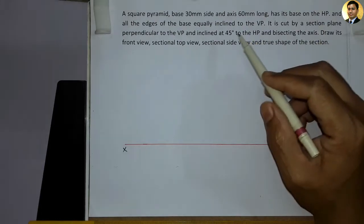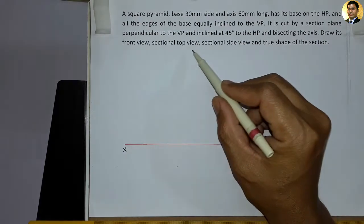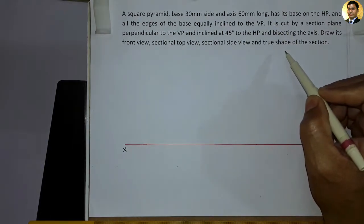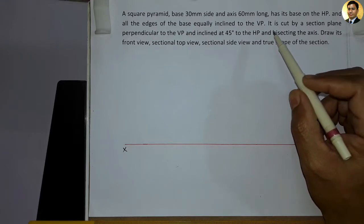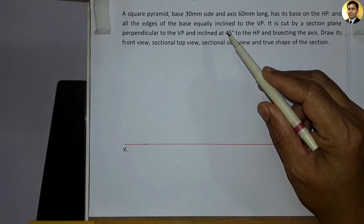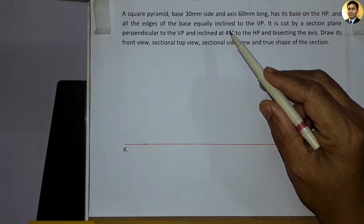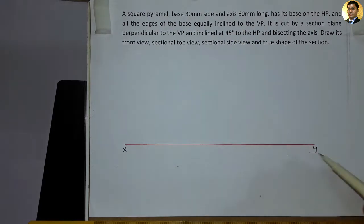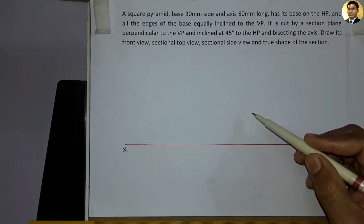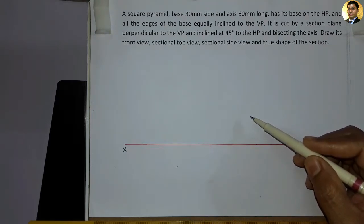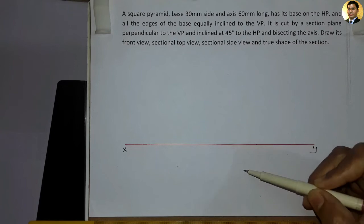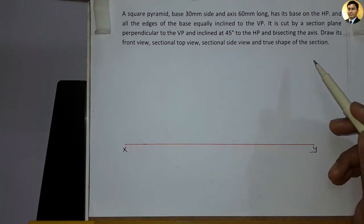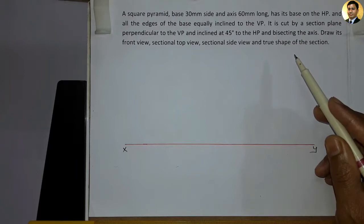Yeh condition ko lekar yeh pyramid ka front view, sectional top view, sectional side view draw karenge. First quadrant ki theory ki mutabik, X-Y line se upar ka plane jo hota hai woh vertical plane hota hai, and we draw the X-Y line. The horizontal plane is below. In this problem we will draw the square pyramid in the top view.